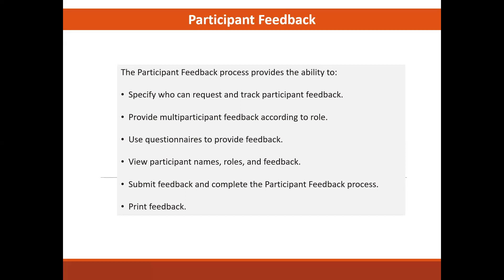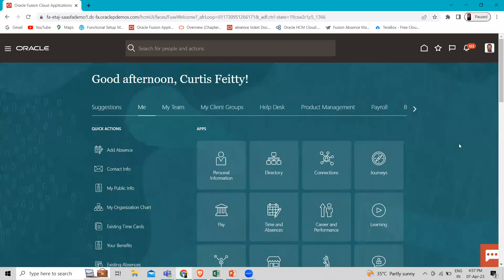They can however only print the content that their role is configured to see. For example, if the performance process flow is configured so that the worker can't view the participant feedback, the worker can't print it. Now let's move on to the application and see how we can enable this manage participant feedback option. I'm logging in as an HR specialist. The HR specialist must have the appropriate security privilege and data role to add participants to a performance document.